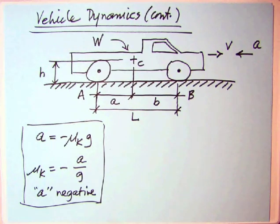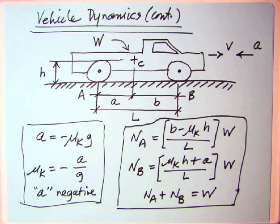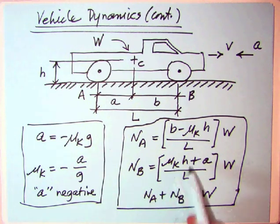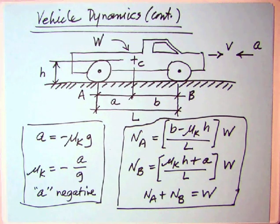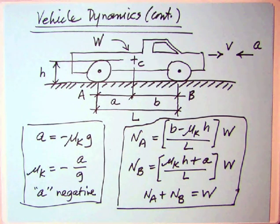What about the two normal forces? Using A, B, and H — noting that acceleration is also called A, so be careful — the expression for NB we found first is W times (mu K times H plus A) divided by L, where mu K times H uses the height and A is the distance. If you solve for NA instead, you get W times (B minus mu K times H) divided by L. The two of them must add up to W. So you've got the entire generalized solution right there — you can substitute in the specific values and proceed directly.